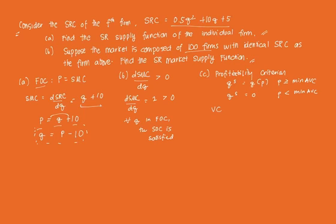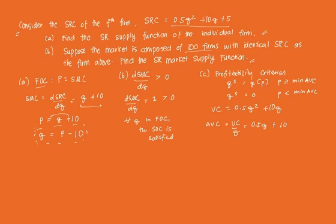Variable cost is the portion of the short-run cost function that changes with Q. So that's equal to 0.5Q² + 10Q — we exclude the 5 because it doesn't depend on Q, meaning 5 is part of the fixed cost. To get average variable cost, we divide variable cost by Q, giving us 0.5Q + 10.